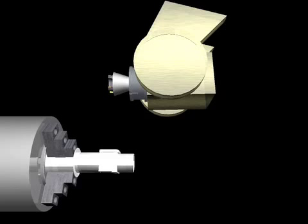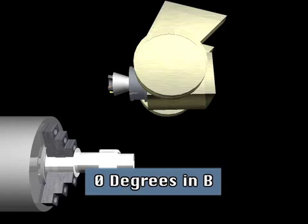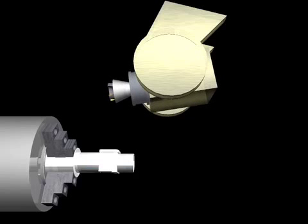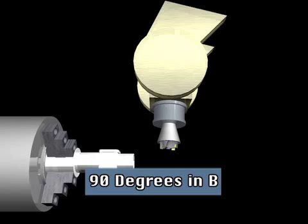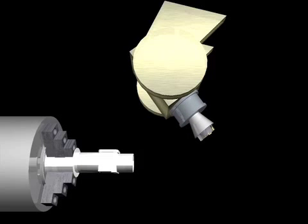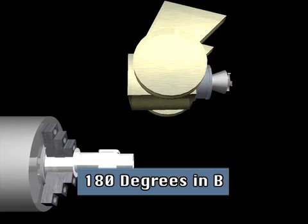With the tool pointing to the left, the spindle is at 0 degrees in the B-axis. When the tool points straight down, it is at 90 degrees in B. With the tool pointing to the right, it is at 180 degrees in B.